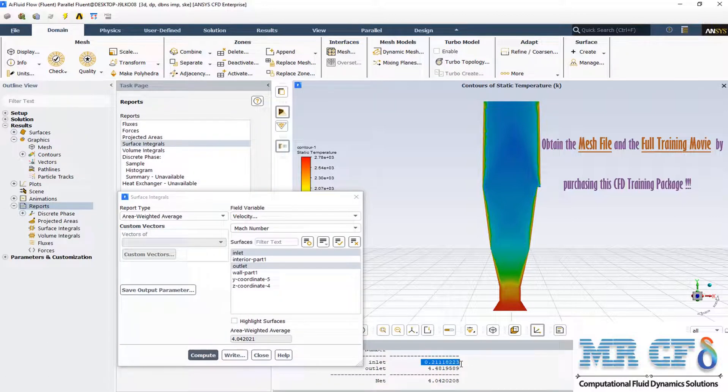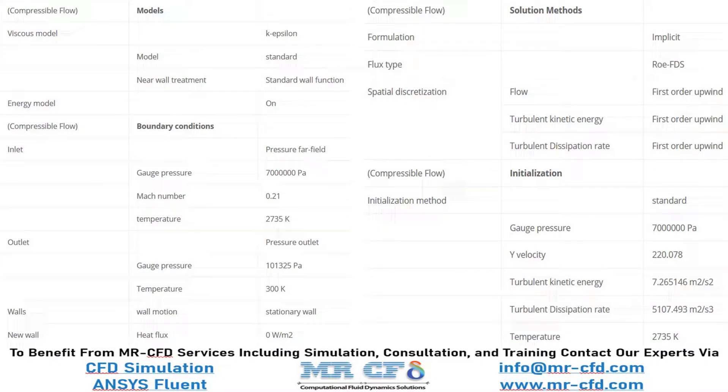The Mach number at the inlet is 0.2 as mentioned before and at the outlet this number reaches more than 4. The applied settings are summarized in these tables.